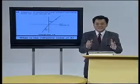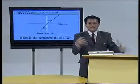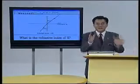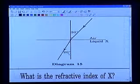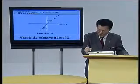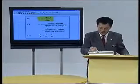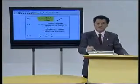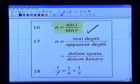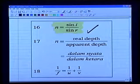Before we answer this question, we need to ask ourselves: what is the meaning of refractive index? This is the most important thing we have to get right first. You said, oh teacher, it's very easy — we have it in the formula. You know that N equals sine I divided by sine R. But what is N, what is sine I, and what is sine R? This is something you have got to be very sure about.